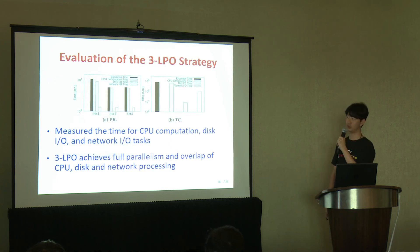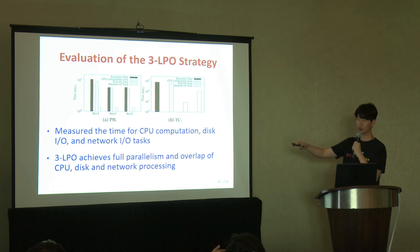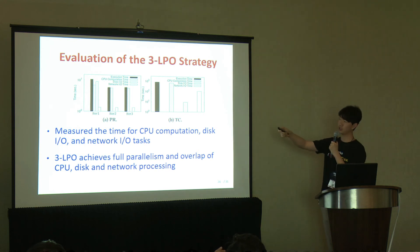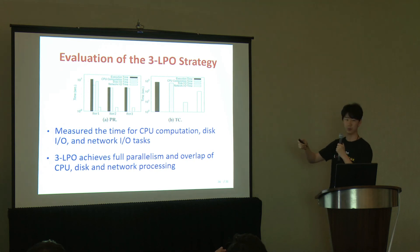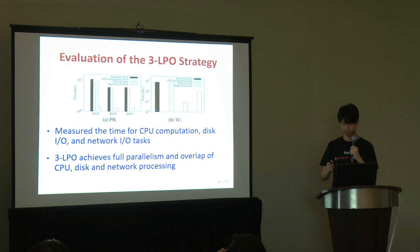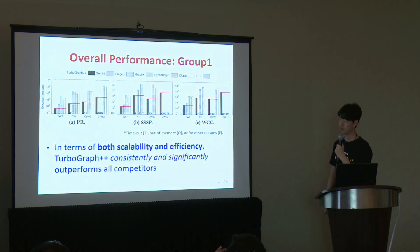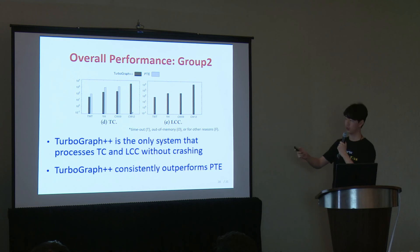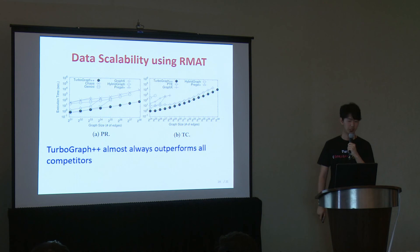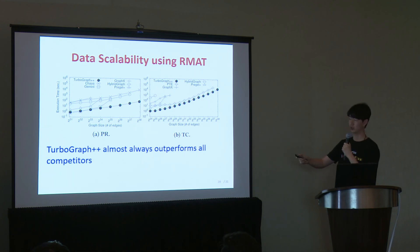We first evaluate our 3LPO strategy by measuring time for CPU computation, disk, and network I/O tasks. Results show that query execution times are almost determined by the most bounded hardware resource, confirming that 3LPO achieves full parallelism and overlap. For overall performance on real graphs with group-1 queries, our system consistently and significantly outperforms all competitors in both scalability and efficiency. For group-2 queries, TurboGraph++ is the only system that processes triangle counting and clustering coefficient without crashing. Data scalability tests with synthetic graphs also confirm that TurboGraph++ outperforms competitors.